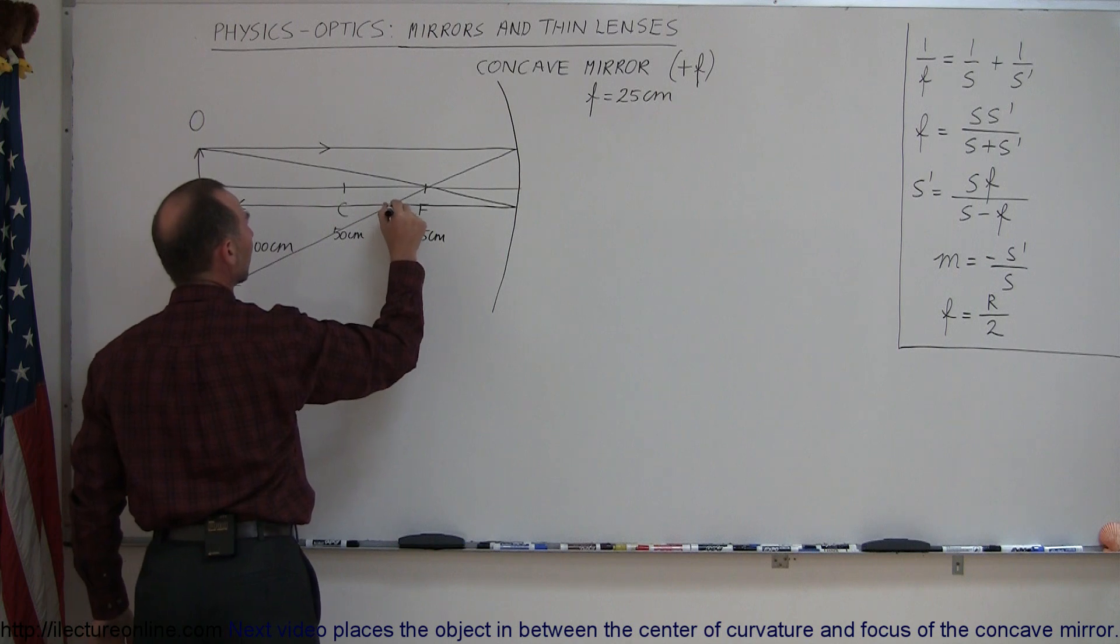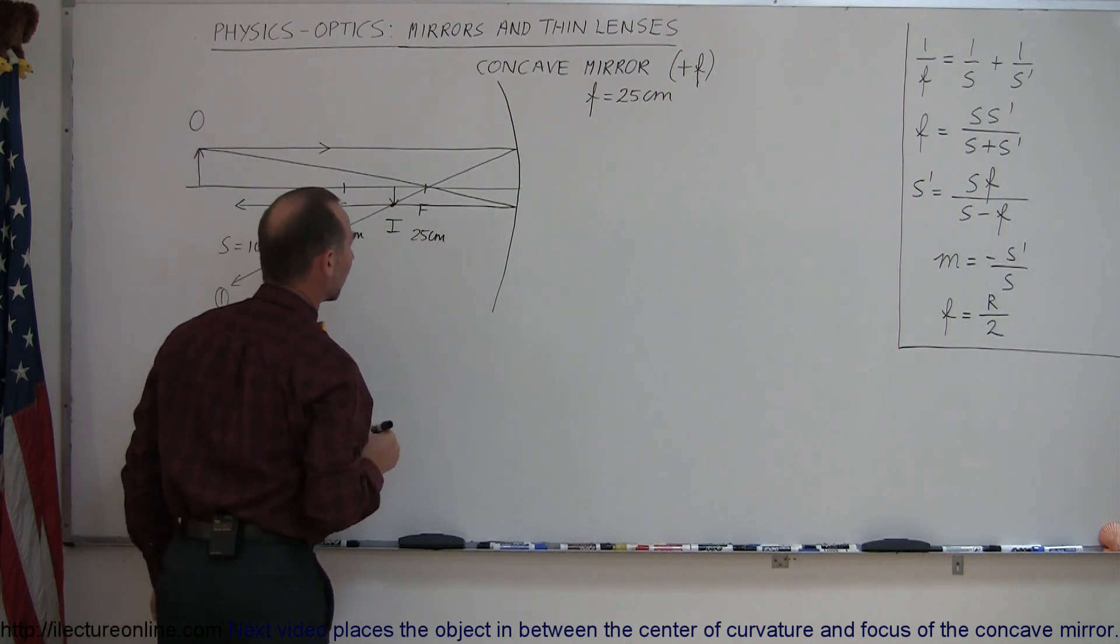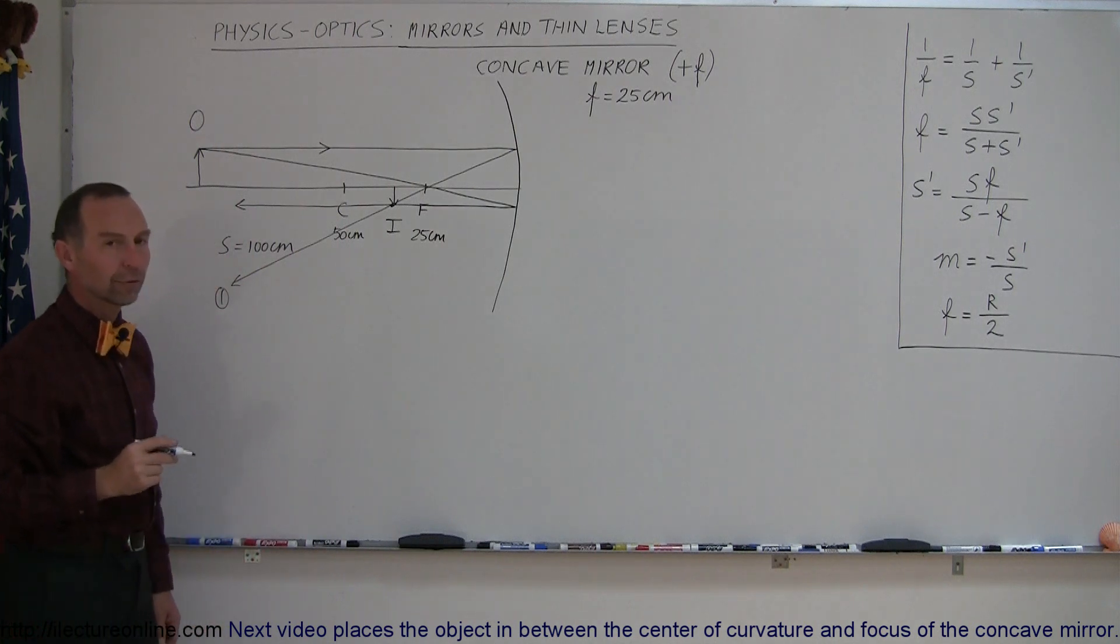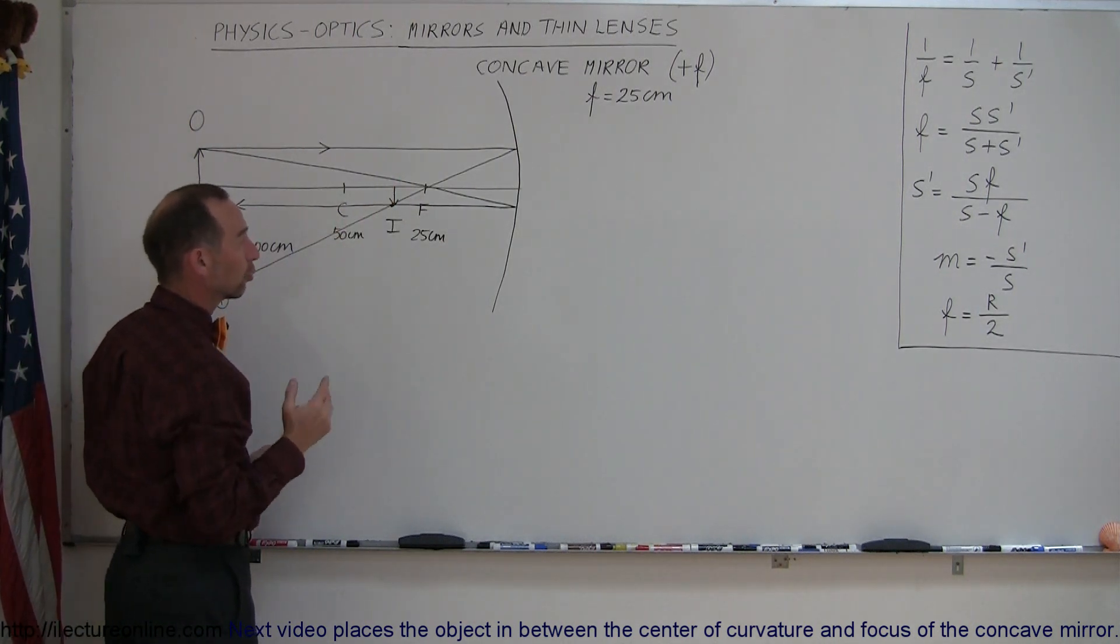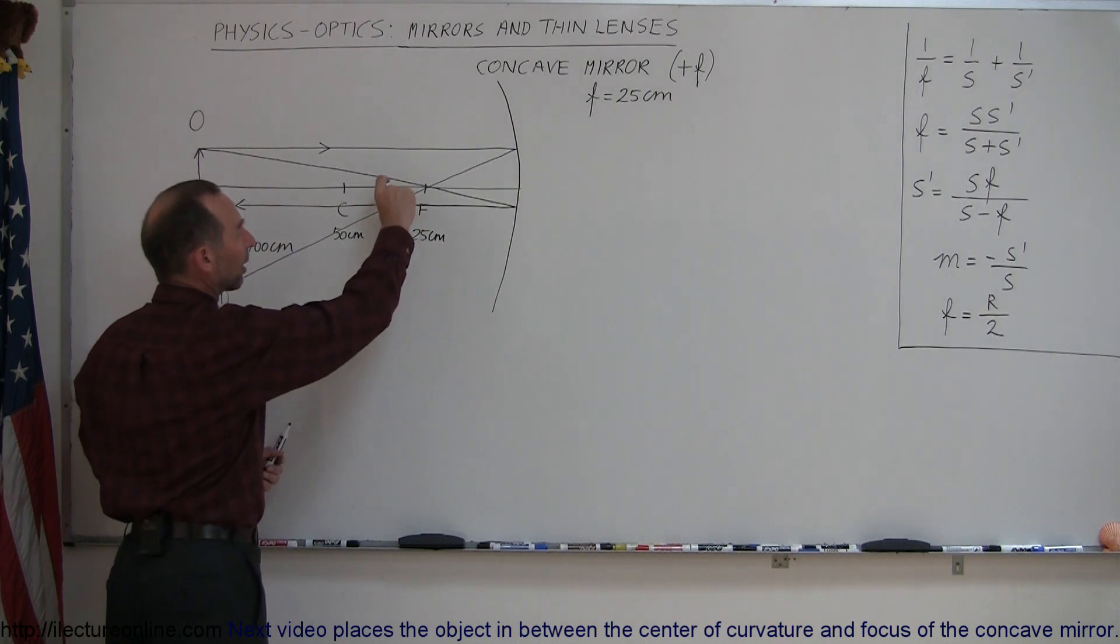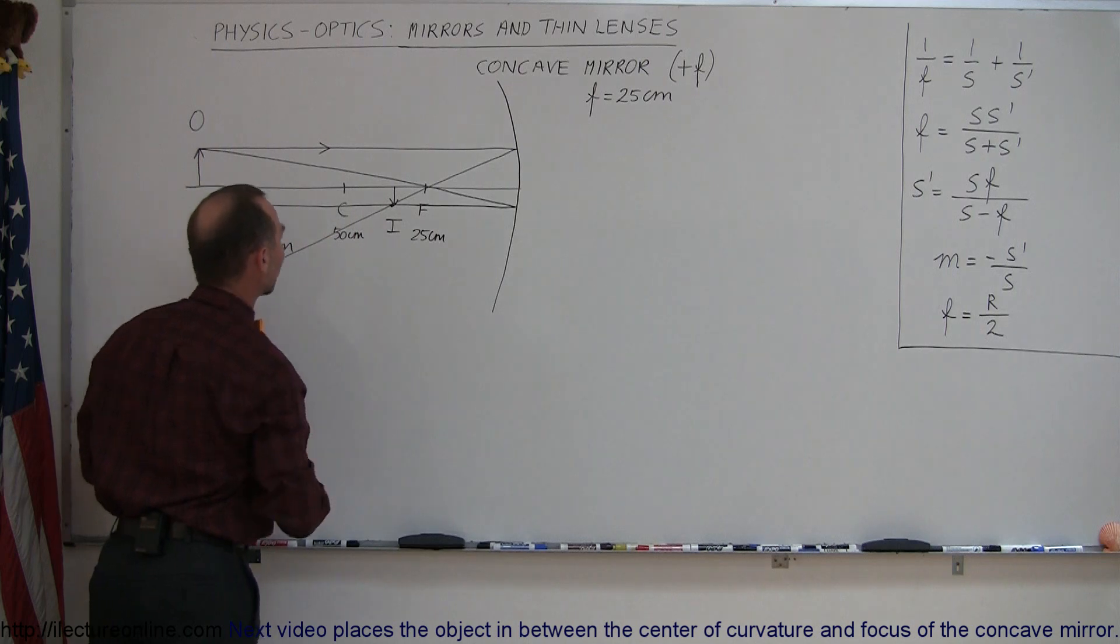And where the two meet, right there, that is going to be the location of the image. So we put the little eye there for the image. Now, it looks like the image is in front of the mirror, which would make it real. It is upside down, and it's located somewhere between the focal point and the center of curvature.